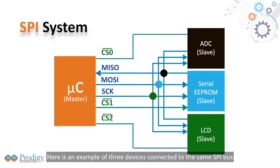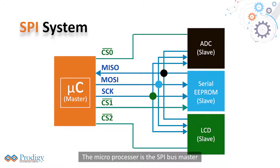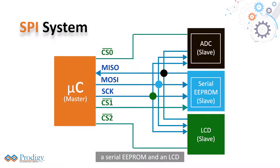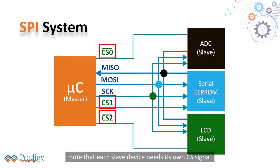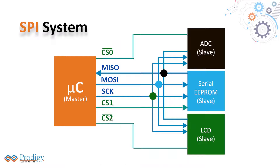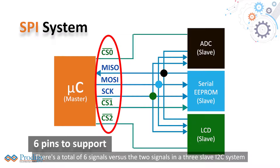Here is an example of three devices connected to the same SPI bus. The microprocessor is the SPI bus master, and the three slaves are an A-to-D converter, a serial EEPROM, and an LCD. Note that each slave device needs its own CS signal, or IO on the microprocessor. There's a total of six signals versus the two signals in a three-slave I2C system.